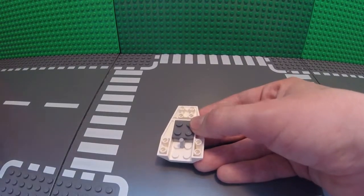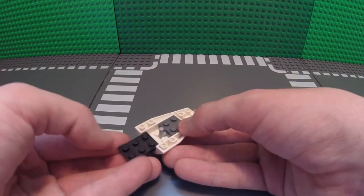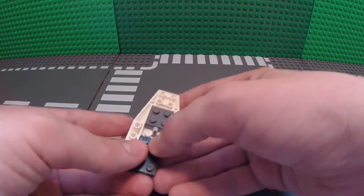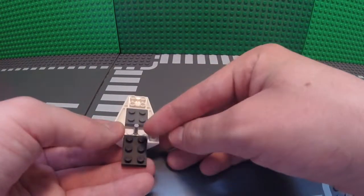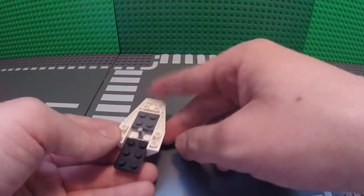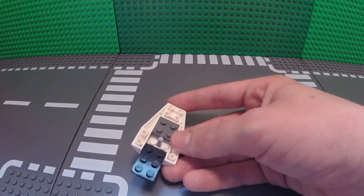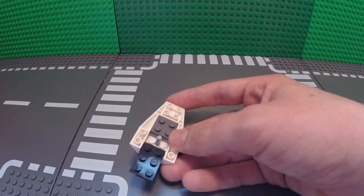Now take your 2x3 plate and place it so that one pair of studs is on this part on the 4x6.